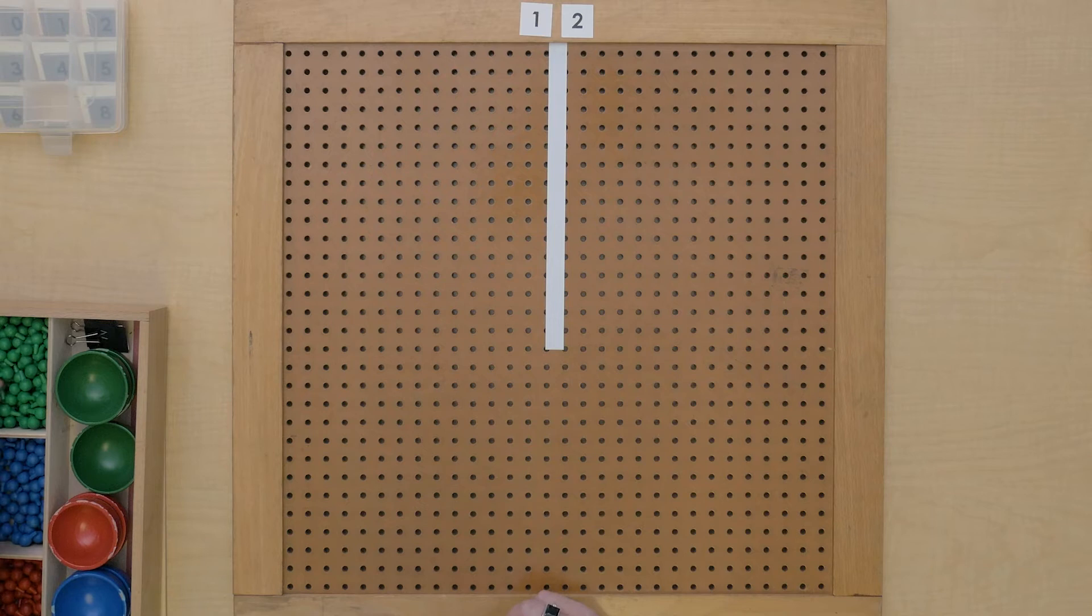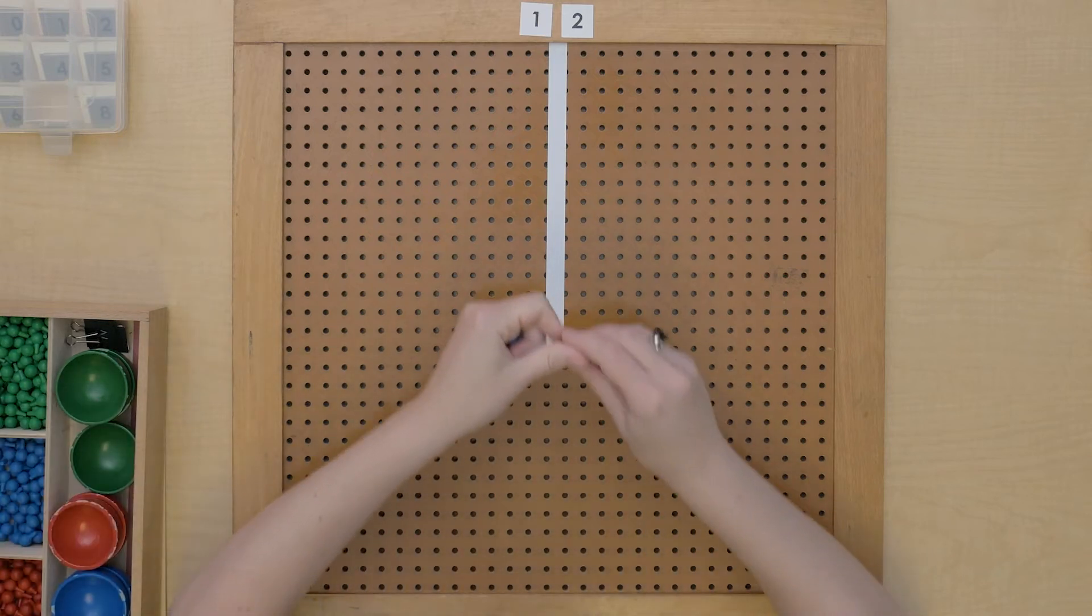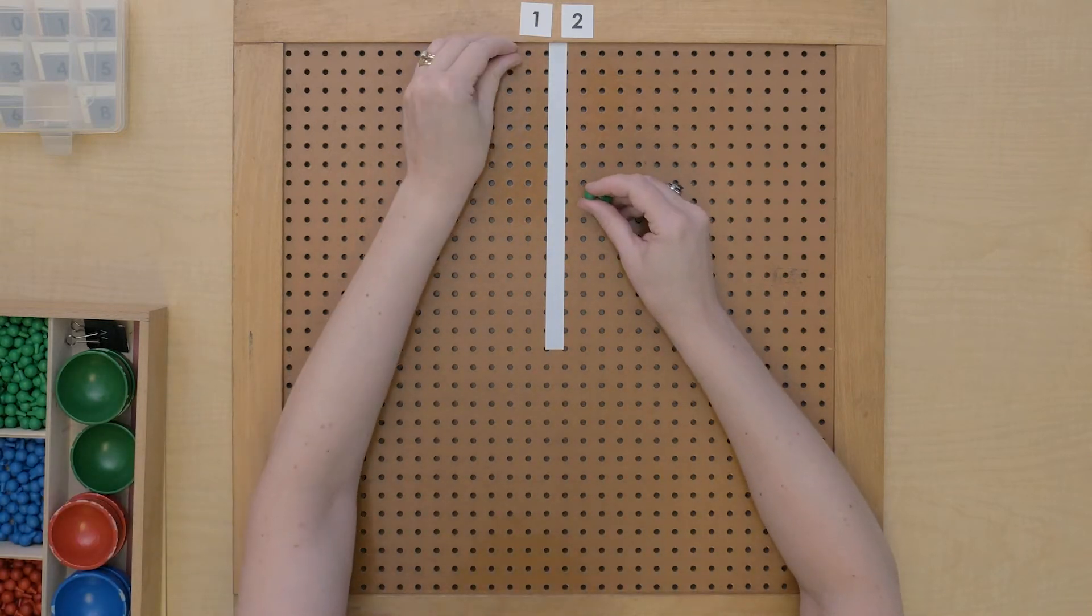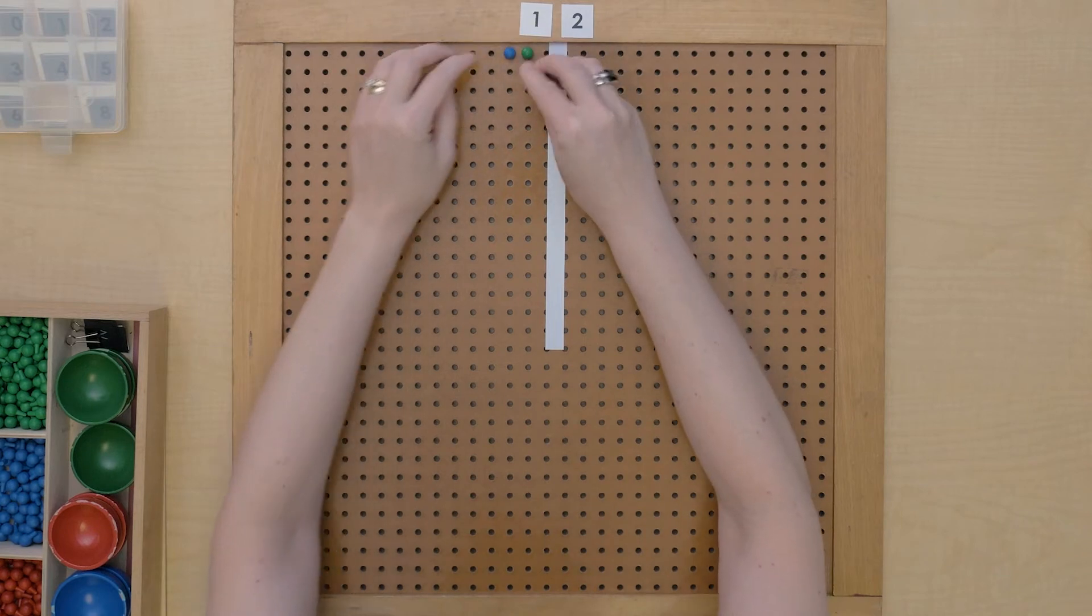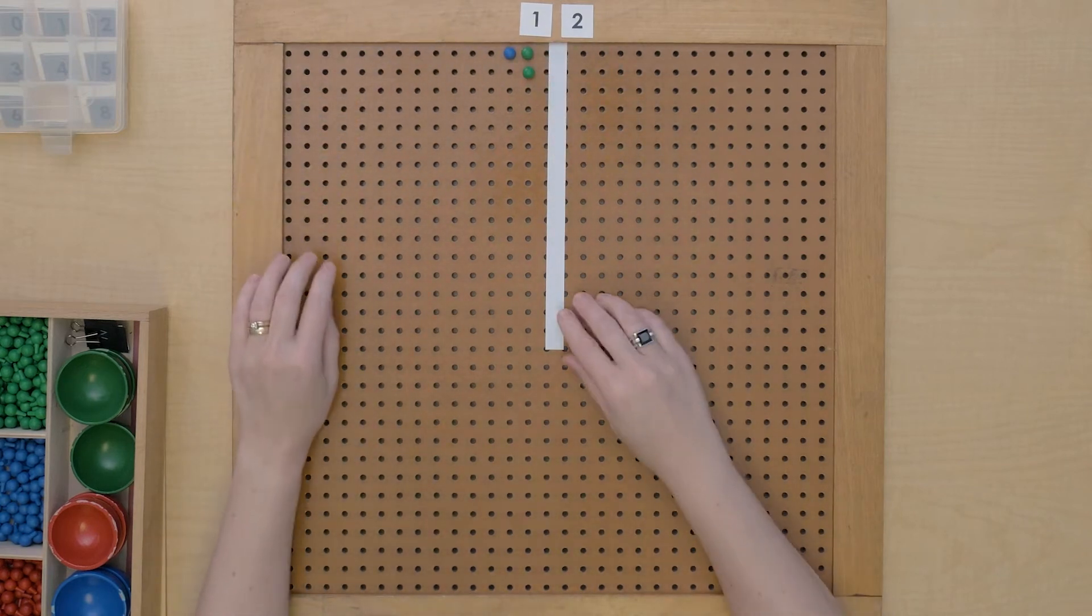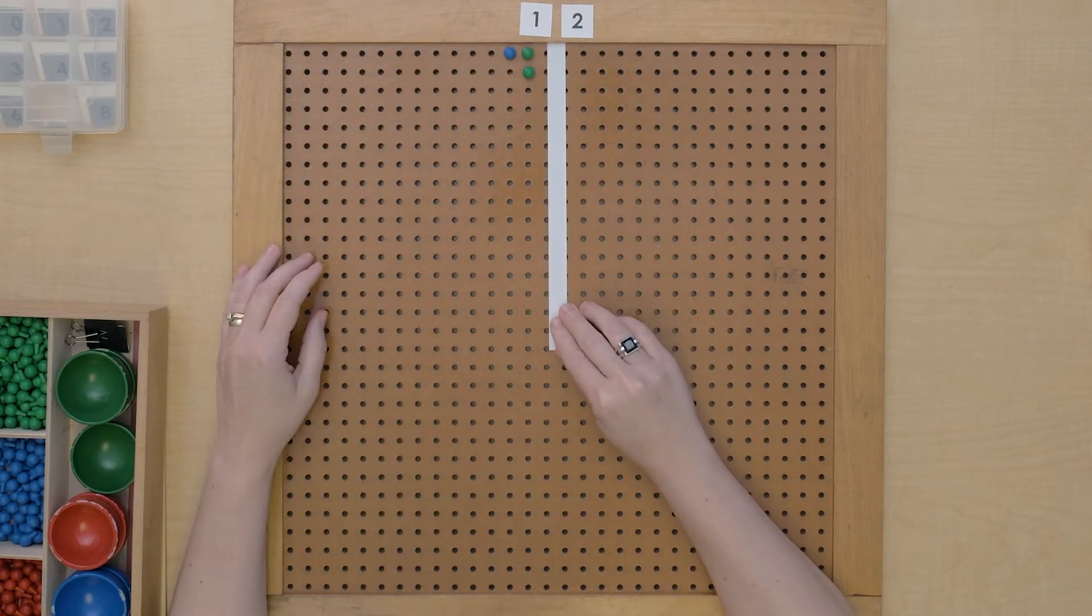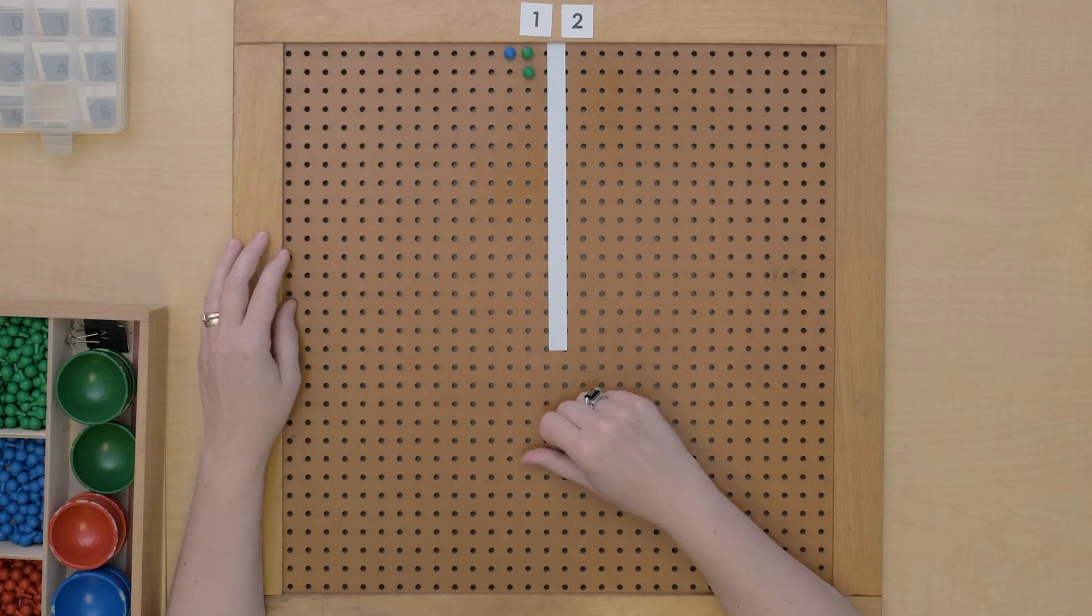So I'm going to make 12 over here. So if I have this 12, let's start thinking about our prime factors. Let's start with the number 2.